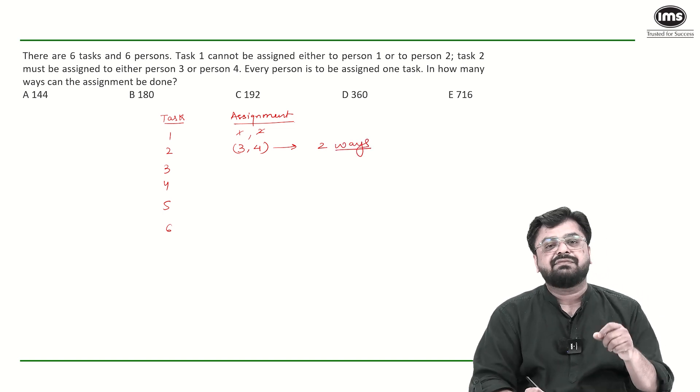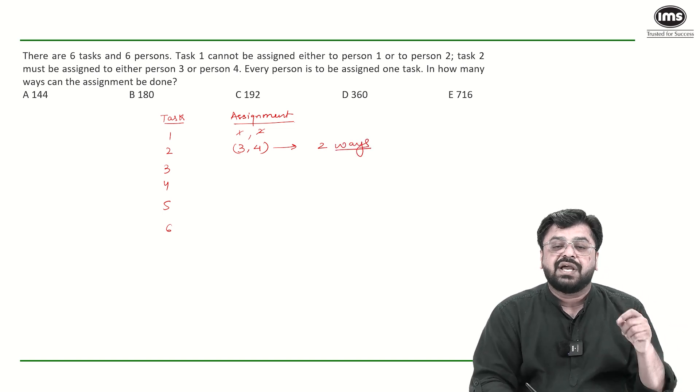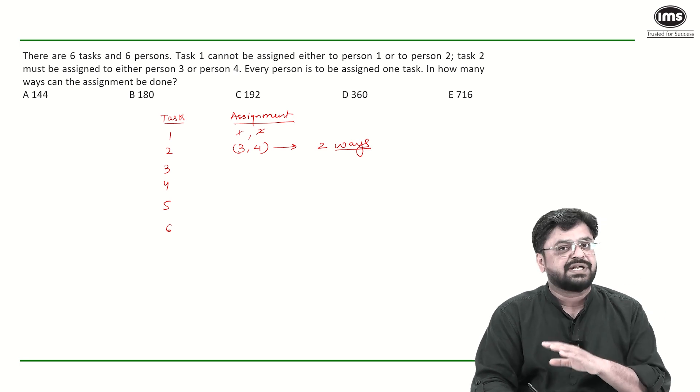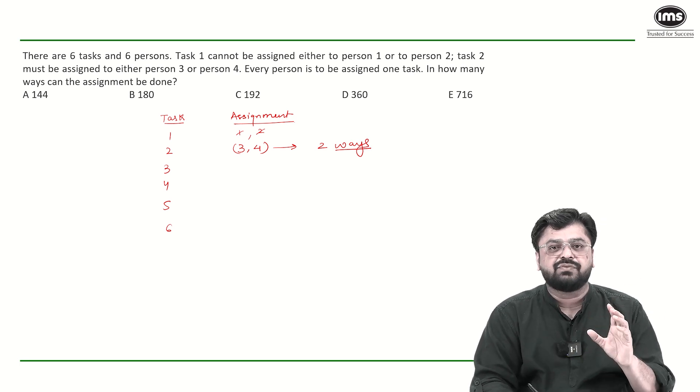Now understand. For task 1, person 1 and 2 are not allowed. And out of person 3 and 4, one must be working on task 2, so he cannot do task 1.